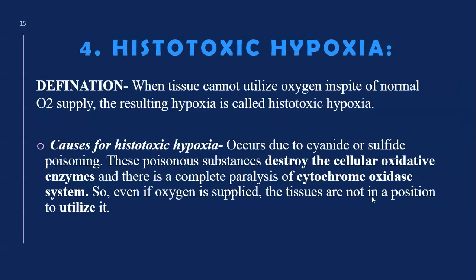The last type of hypoxia is histotoxic hypoxia. It is the condition when tissues cannot utilize oxygen in spite of a normal O2 supply. Here, oxygen, velocity of blood flow, and everything are all normal, but the tissues cannot utilize the oxygen.